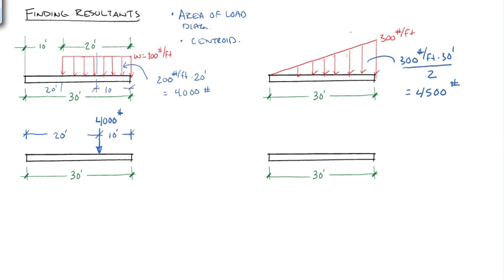The centroid of a triangle is one-third of the distance from each end, so it's 10 feet from this end, or 20 feet from this end. And in this case, we get a point load of 4,500 pounds, 10 feet from this end and 20 feet from this end.